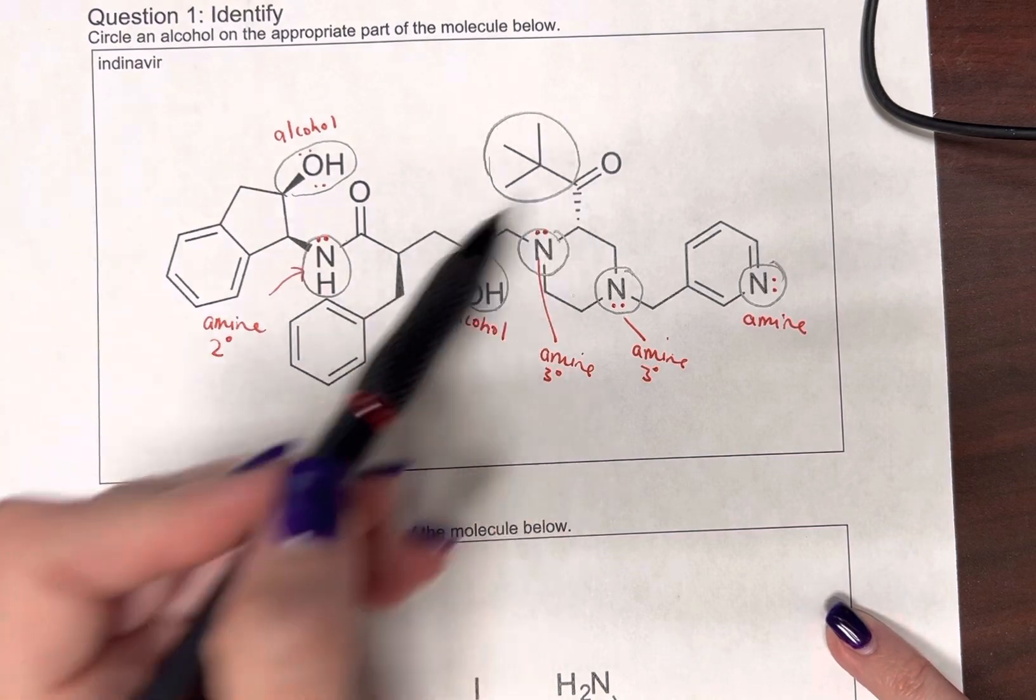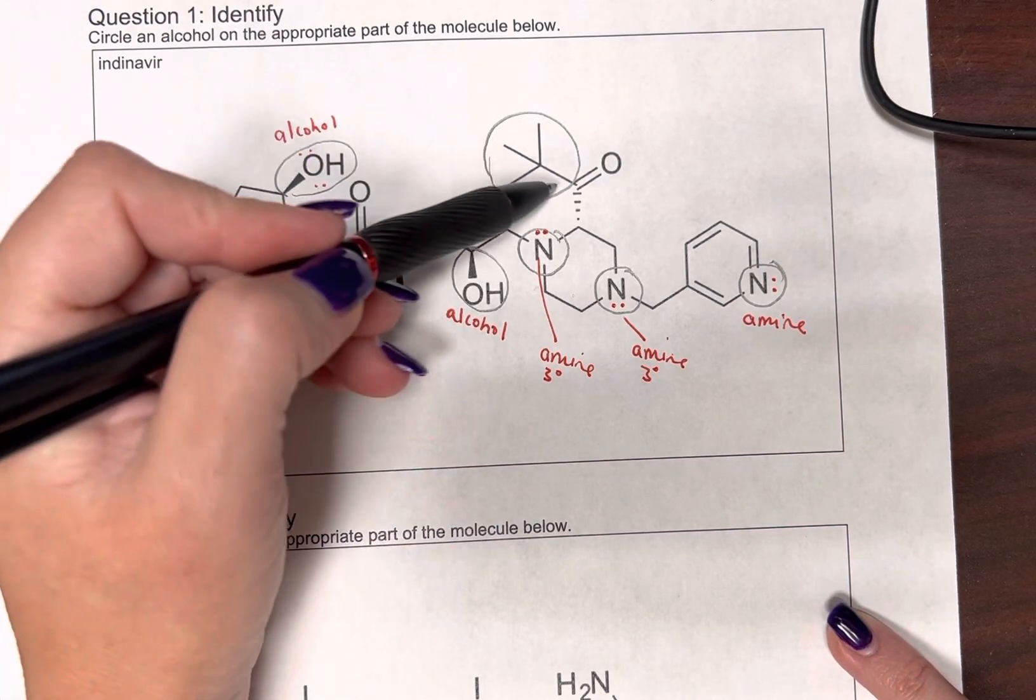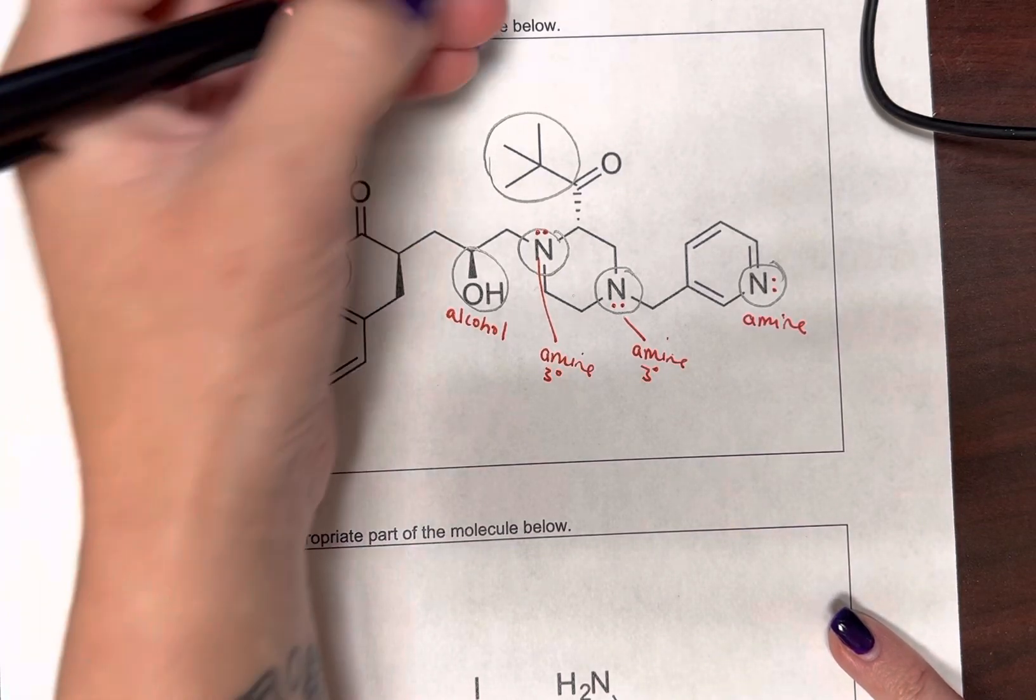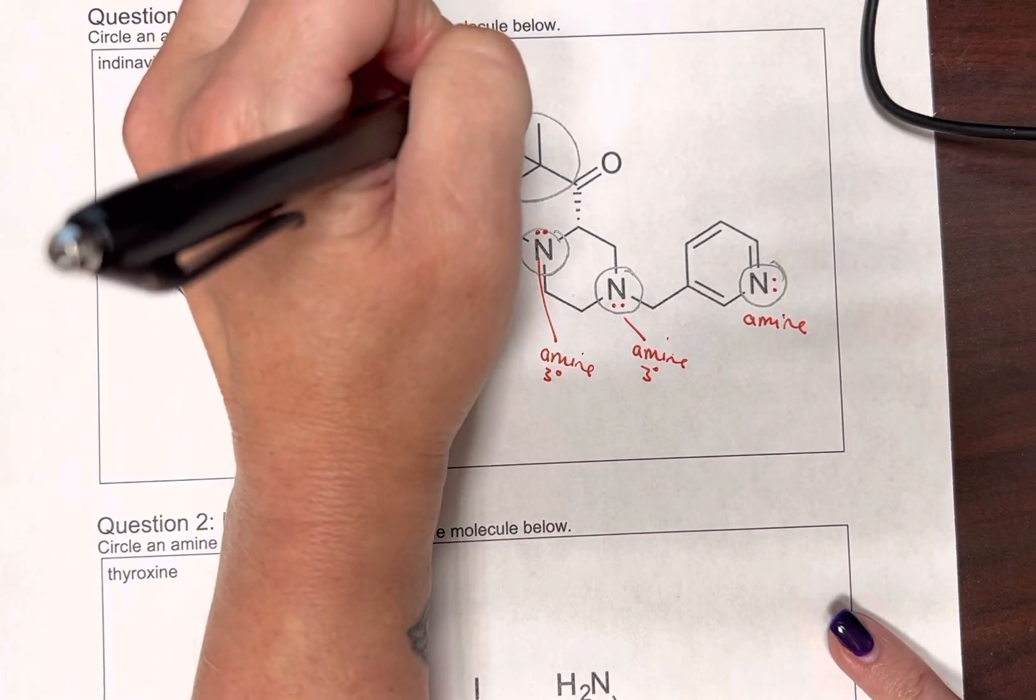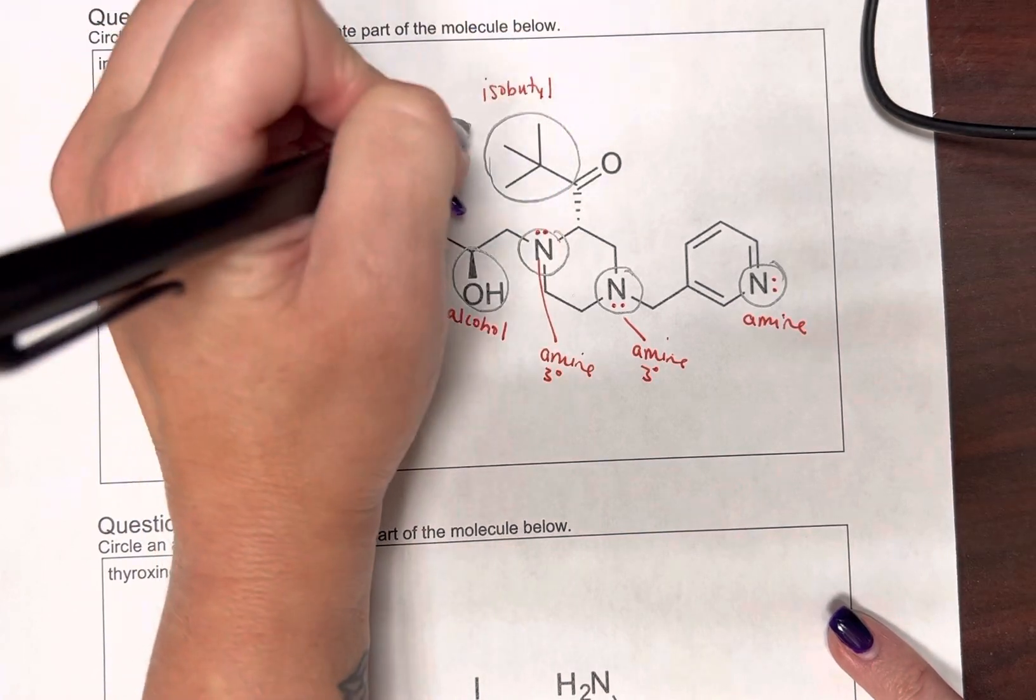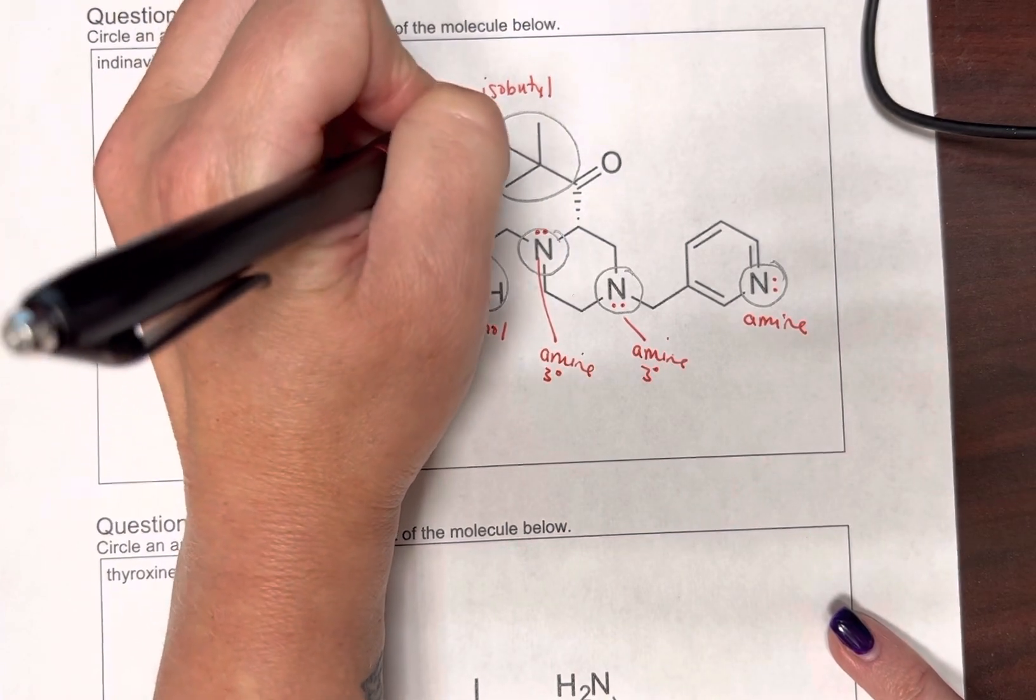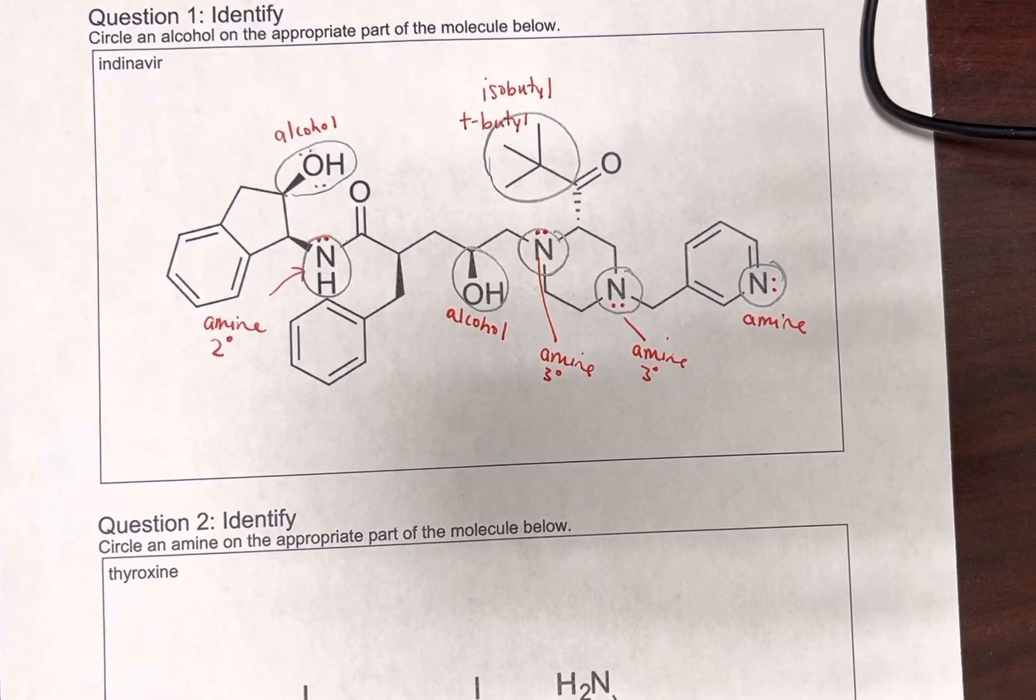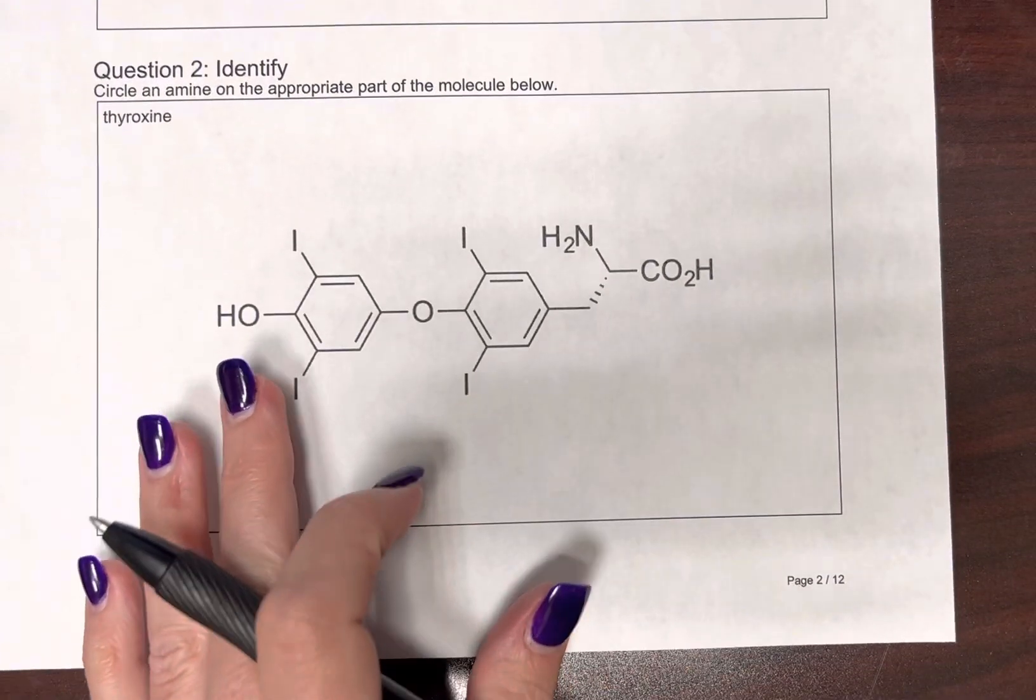See how this is just a carbon chain that's sticking off? So here we have one, two, three, four. Look, it's a chicken foot. So I'm going to call this isobutyl. If you would like to call it a tertiary butyl group, you can. Okay, back down here.